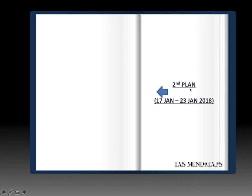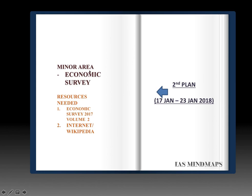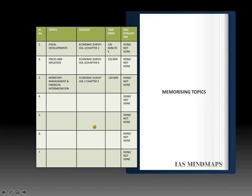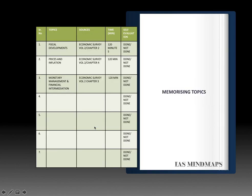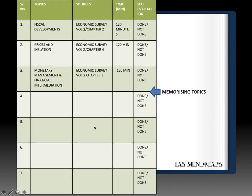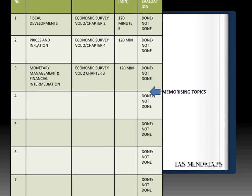So this is the second plan of this week. The first plan video has already been uploaded giving you the targets in the field of Indian polity. For this economic survey plan, the resources needed are Economic Survey 2017 Volume 2, available online from the Ministry of Finance, and you must also have access to the internet and Wikipedia for looking into some terms. There are three chapters of Economic Survey for this week: Chapter 2, Chapter 3, and Chapter 4.